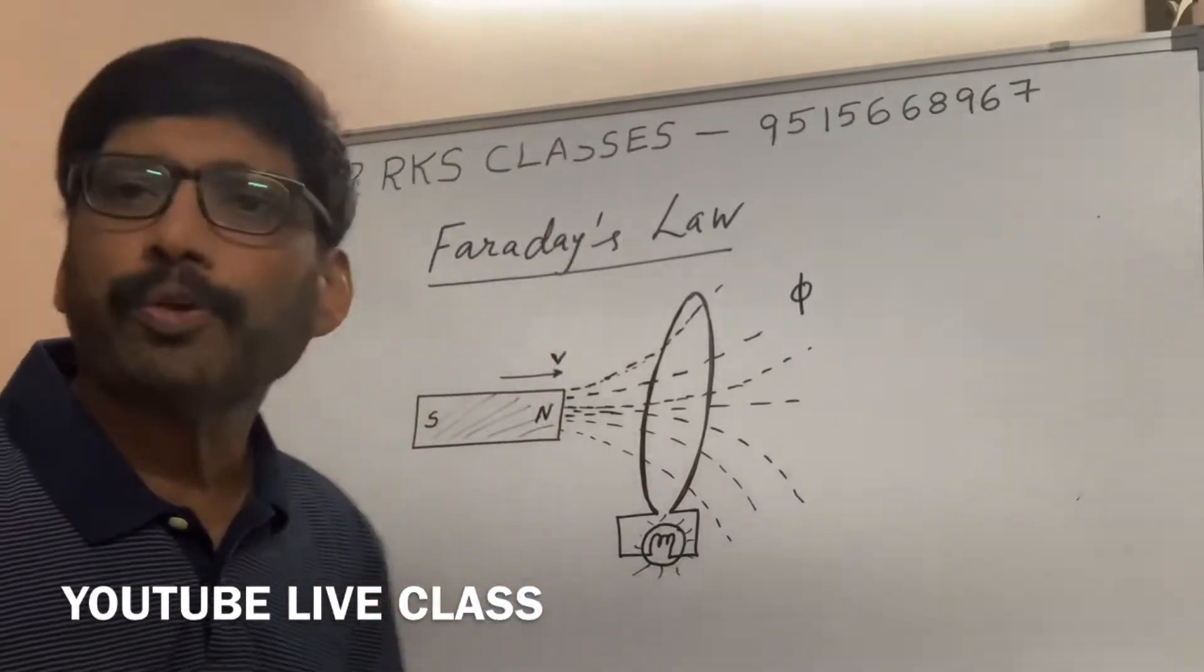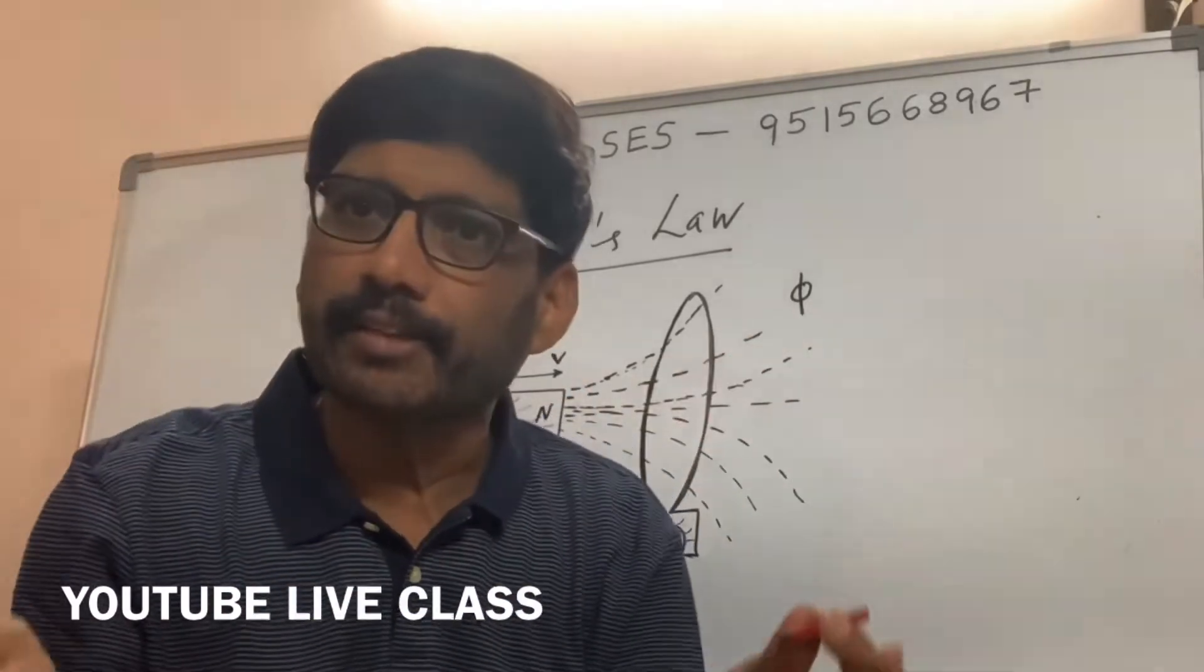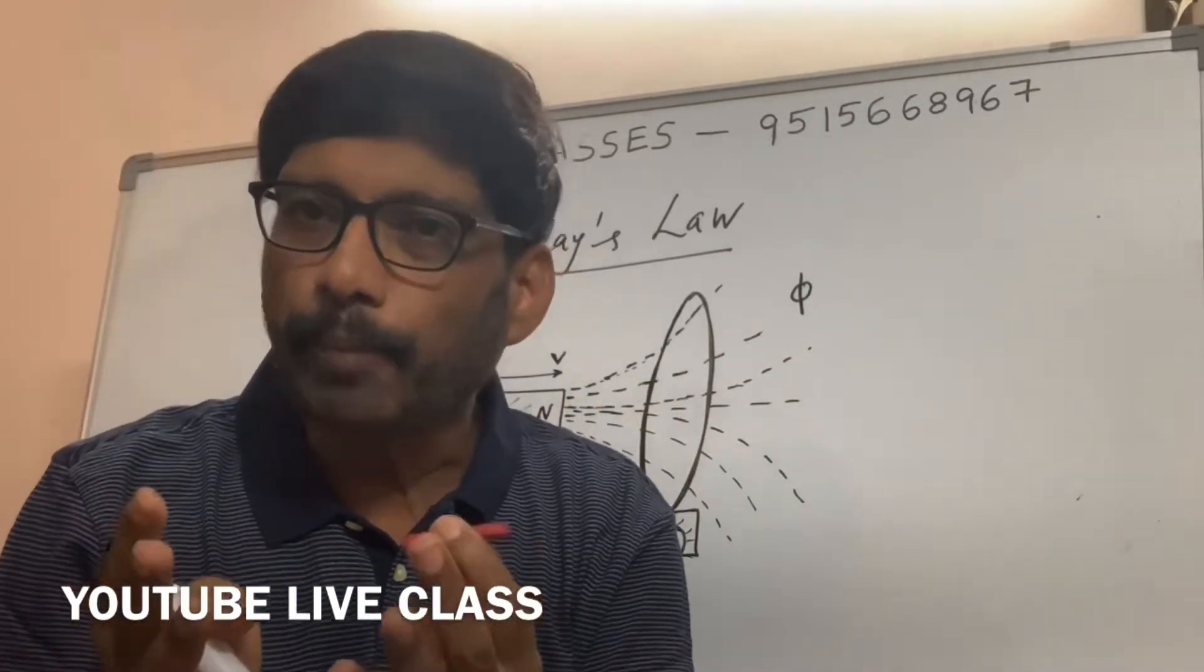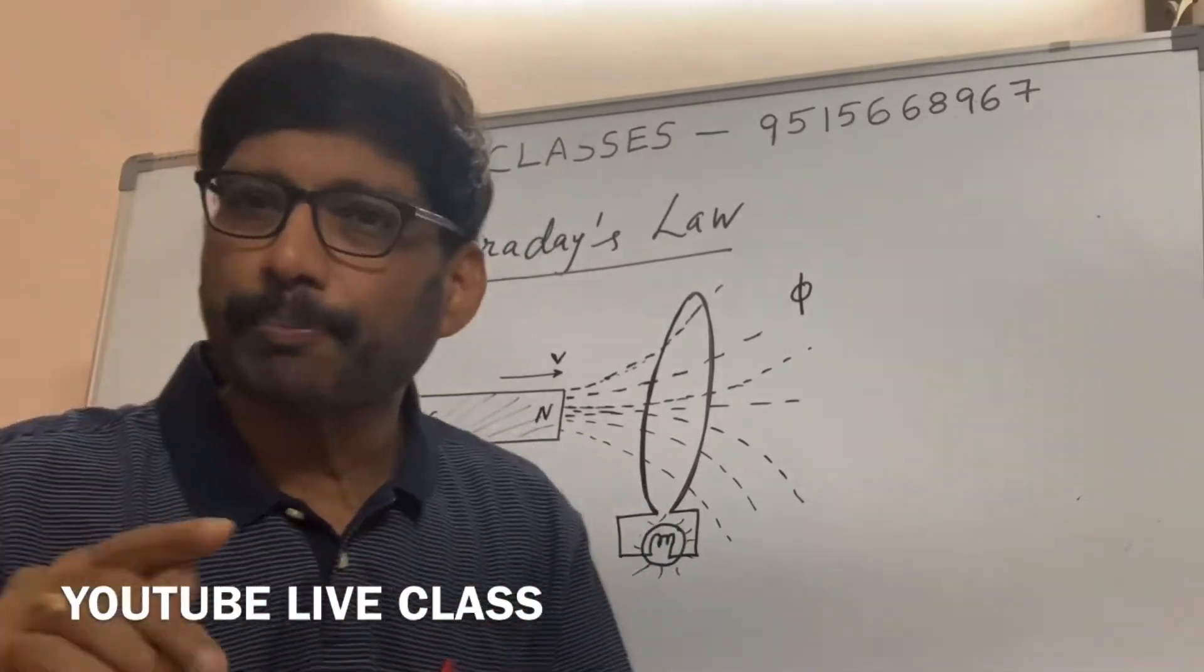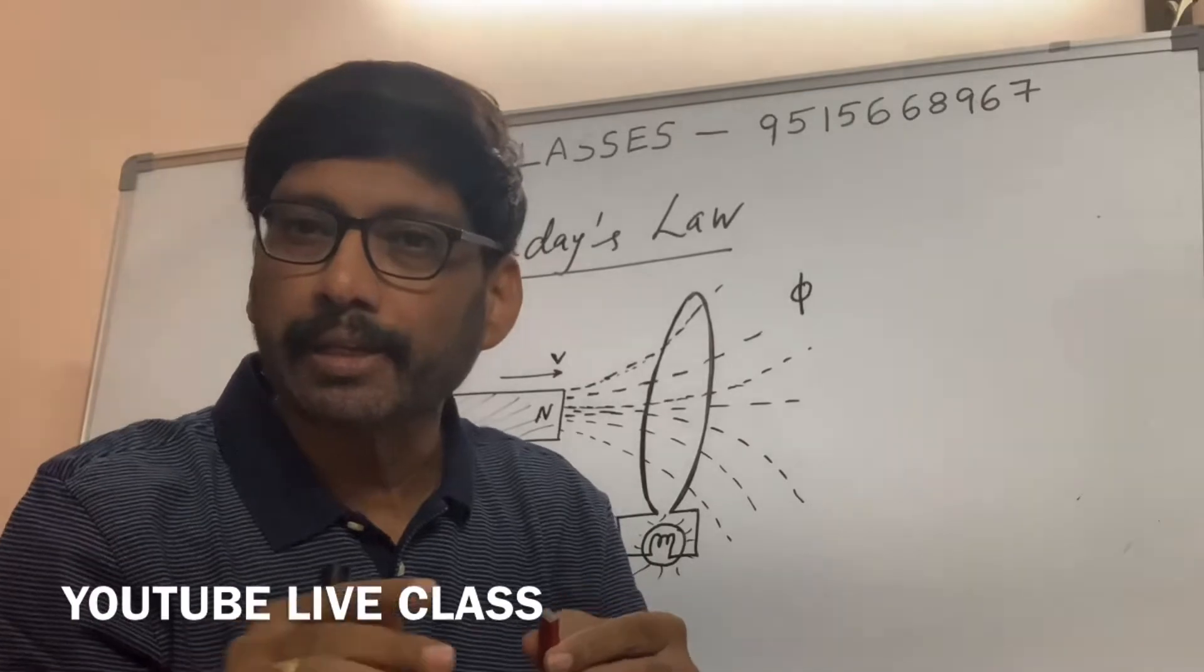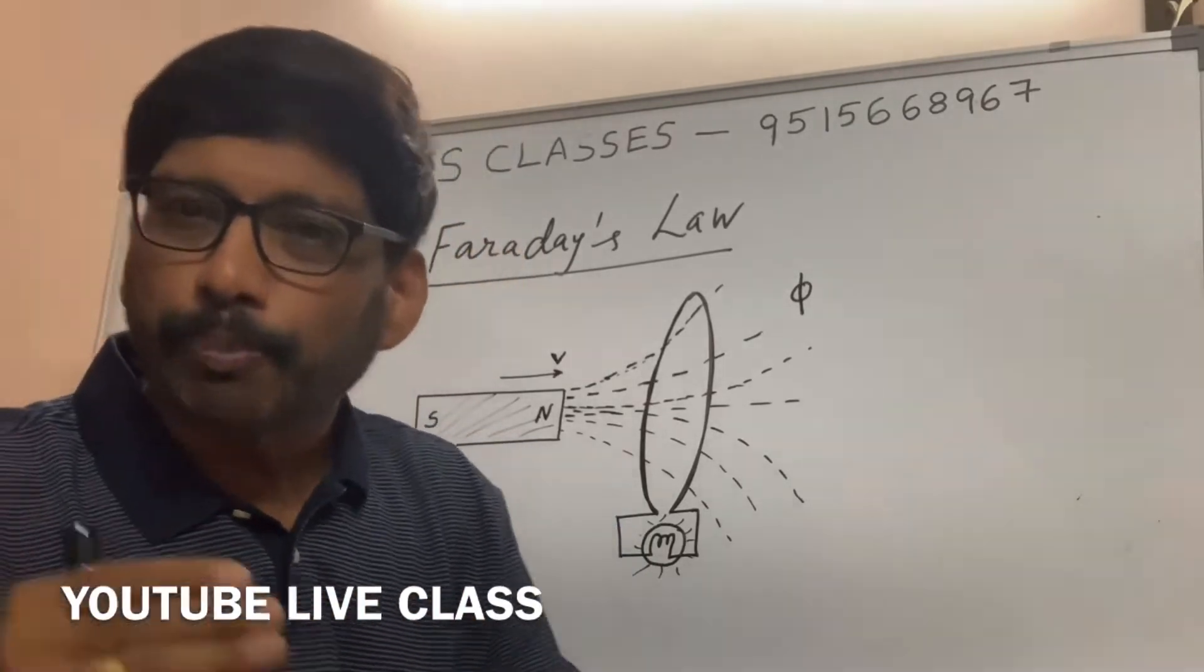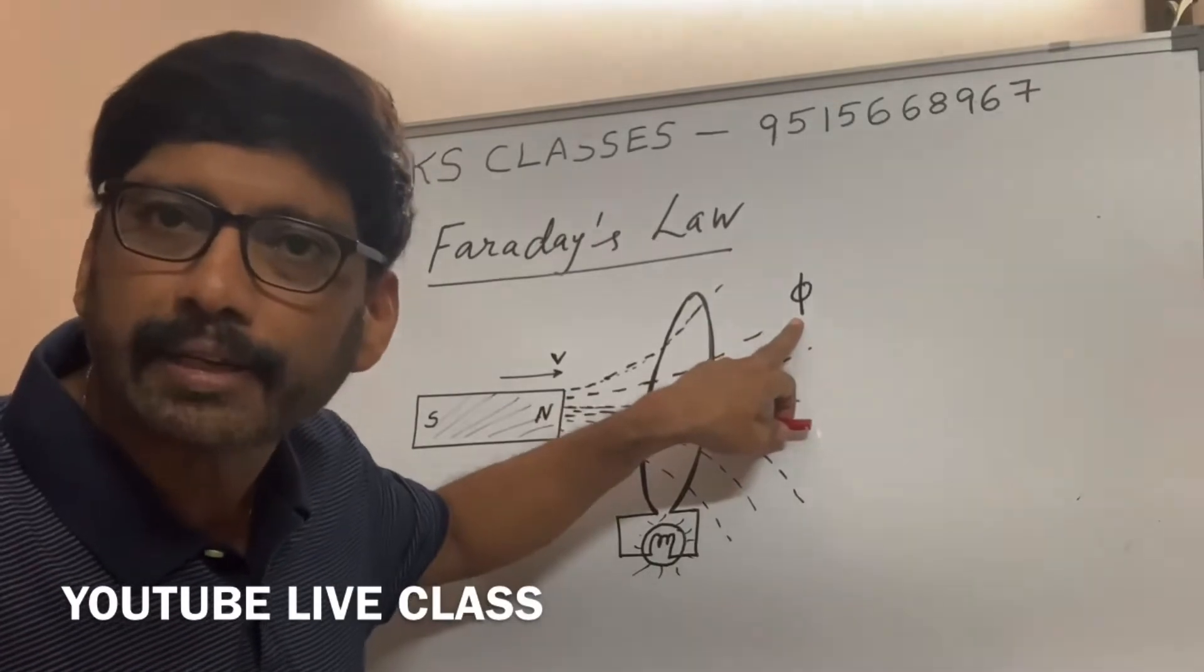So if you take a magnet, bar magnet, surrounding the magnet its influence is there. That influence we call as magnetic field. That magnetic field is reflected by magnetic lines of force, which is also called magnetic flux.